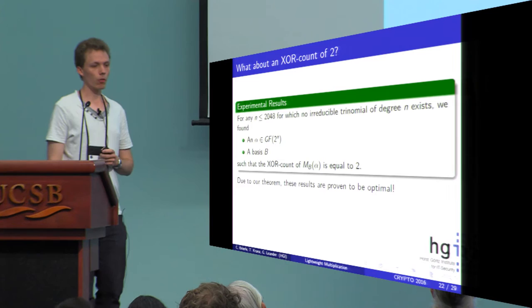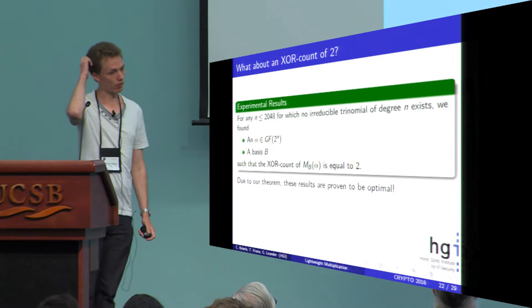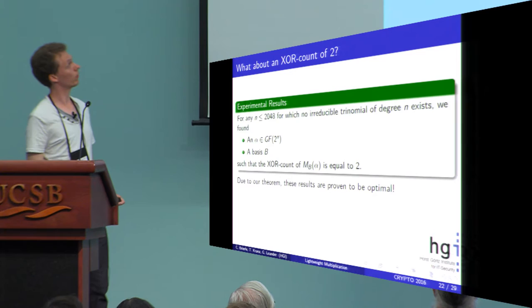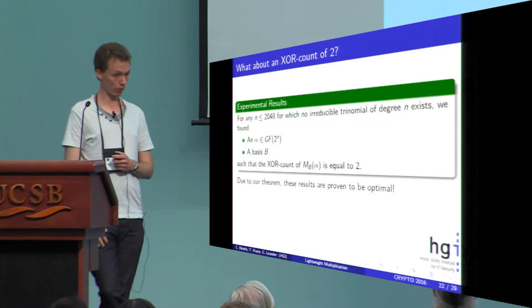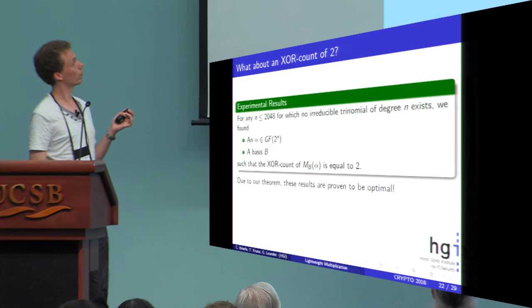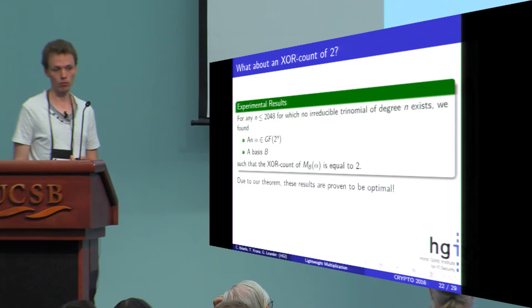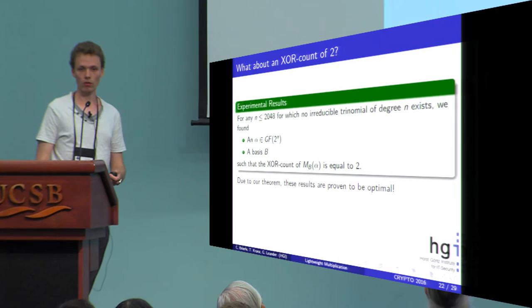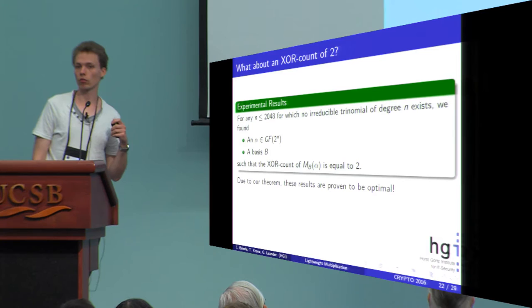What about an XOR count of two? Now we characterized elements with an XOR count of one. What about higher XOR counts? In fact this turns out to be very difficult to understand the structure here. So we only have experimental results here. In particular for any field dimension up to 2048 for which no irreducible trinomial of this degree exists, we found an element alpha and a basis such that the XOR count of this element is equal to two. Because of our necessary and sufficient condition for the XOR count of one these results are proven to be optimal.